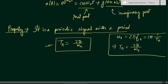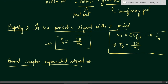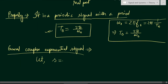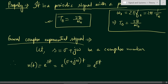Now let us see what is the general complex exponential signal. We assume s = σ + jω, which is a complex number. We define x(t) = e^(st) = e^((σ + jω)t), which can be rewritten as e^(σt) · e^(jωt).